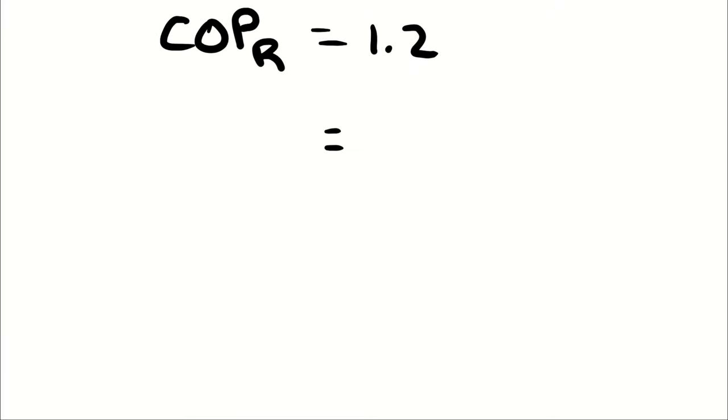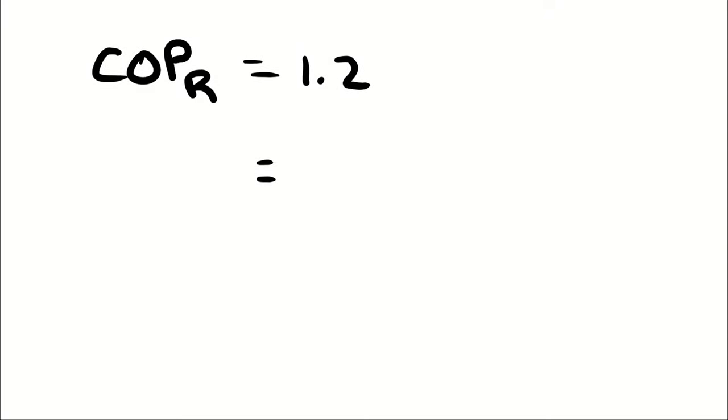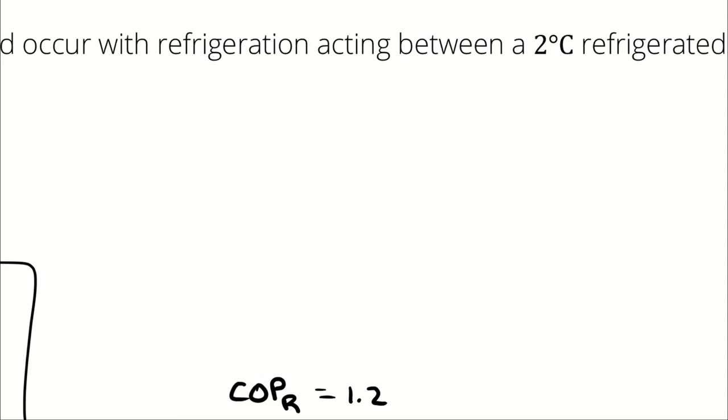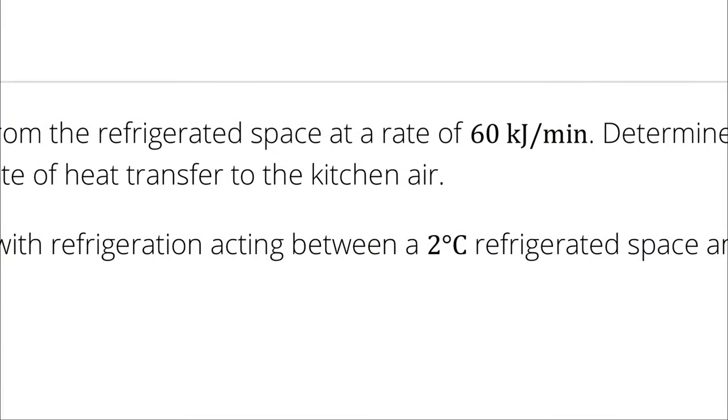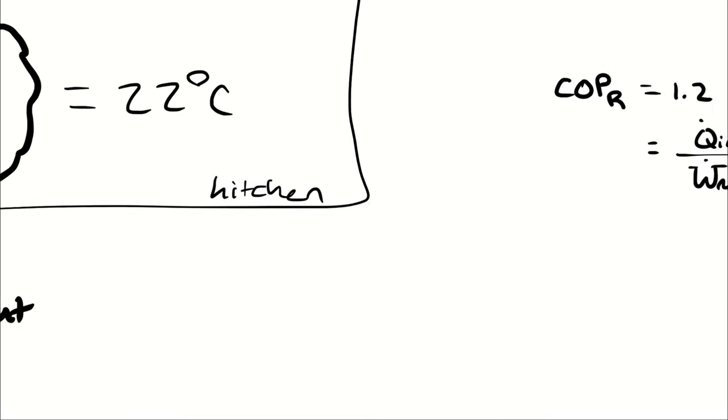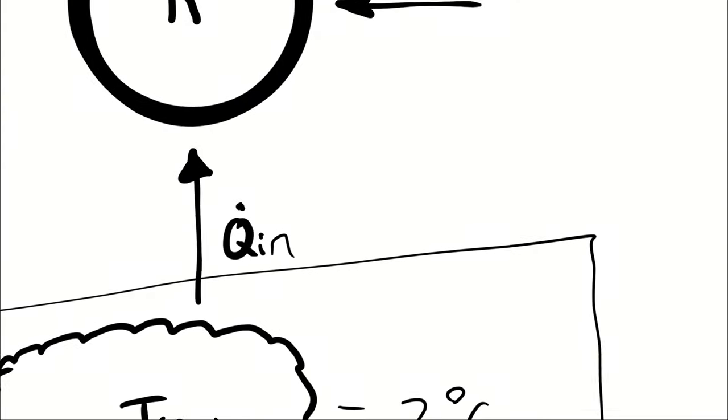I know that my coefficient of performance of a refrigeration cycle operating in refrigerating mode is the proportion of heat transfer in to the network in. And I know that it is removing heat from the refrigerated space at a rate of 60 kilojoules per minute. So that's giving me Q_in.